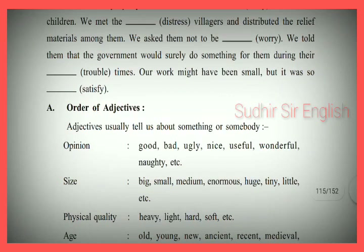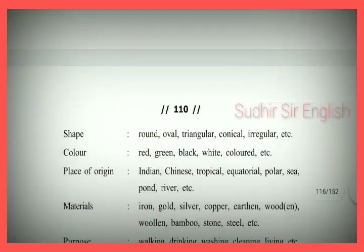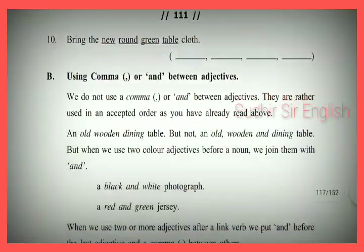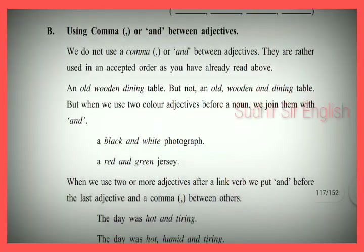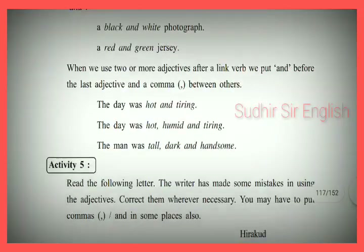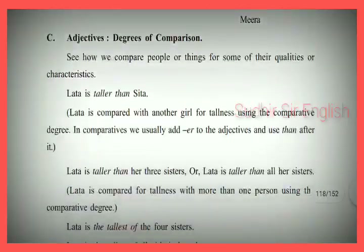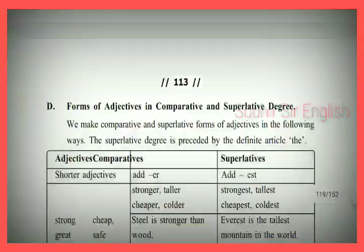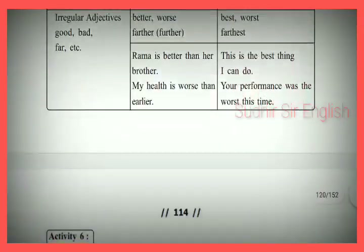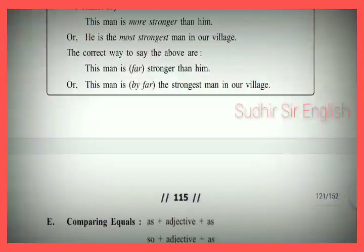Next we will look at the order of adjectives — using comma and 'and' between adjectives — and adjective degrees: positive, comparative, and superlative. Activity six will be covered in the next video.